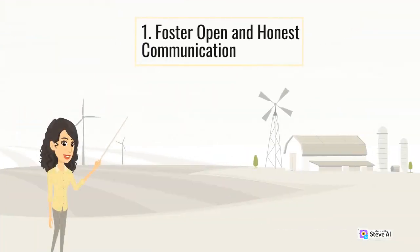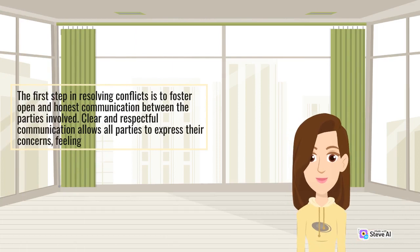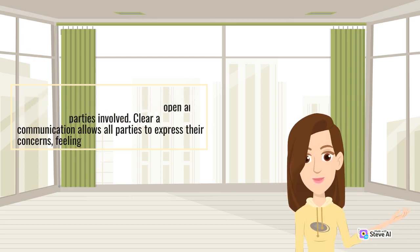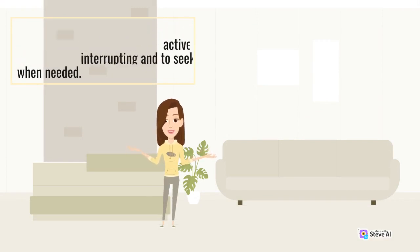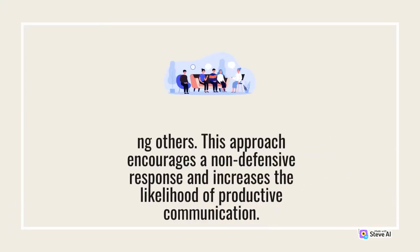1. Foster Open and Honest Communication. The first step in resolving conflicts is to foster open and honest communication between the parties involved. Clear and respectful communication allows all parties to express their concerns, feelings, and perspectives. It is essential to actively listen to each other without interrupting and to seek clarification when needed. When engaging in communication, using I-messages rather than you-messages is highly recommended. I-messages imply taking responsibility for one's own feelings and experiences, rather than blaming others. This approach encourages a non-defensive response and increases the likelihood of productive communication.